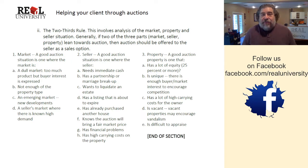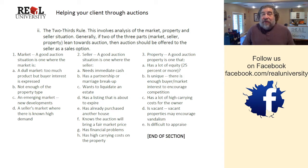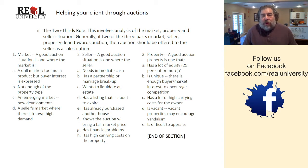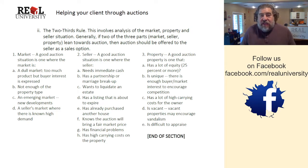There is a rule we can use called the two-thirds rule. It looks at the property, the market, and the seller as three distinct categories. If your property meets or leans toward two of the three categories, then that house is probably a great candidate for auctioning. Let's take a look at these — I've got them laid out for you. If the market is a good situation for an auction, such as a dull market where there's not a lot of activity, we can use the auction to boost activity by creating buyer frenzy.